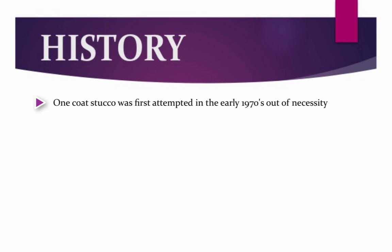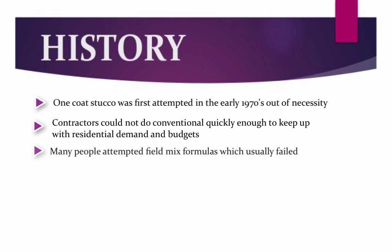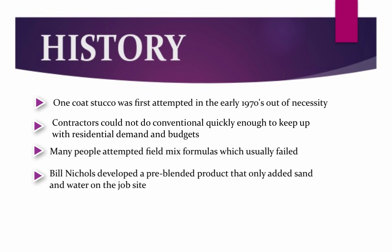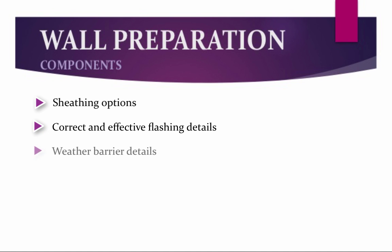One Coat Stucco was first attempted in the early 1970s out of necessity. Contractors could not do conventional stucco quickly enough to keep up with residential demand and budgets. Many people attempted field mix formulas, which usually failed. Bill Nichols, who many consider the godfather of one-coat stucco, developed a pre-blended product that only added sand and water on the job site. Mr. Nichols obtained an ICBO report with a one-hour firewall assembly rating. We will discuss different sheathing options, correct flashing details, weather barrier selection, and optional drainage materials.